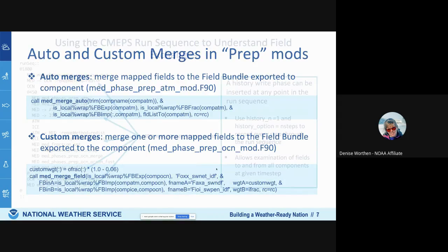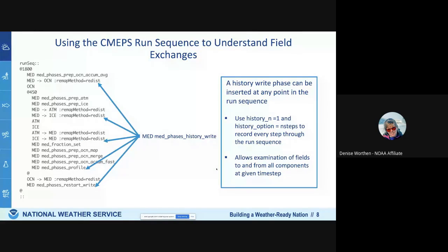I wanted to spend a little time on one more feature of CMEPs that I think is incredibly powerful for people thinking about doing development within the component models of S2S. You can put a history write phase anywhere within the run sequence and obtain a snapshot in time of all fields that the mediator currently has in its state. This provides a very granular look at how fields are exchanged as they progress through the run sequence from each component into each component — a really powerful tool for developers.